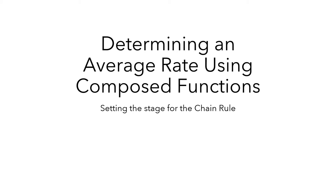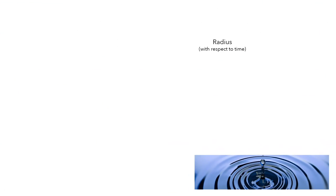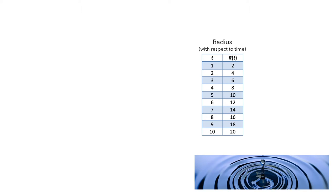In this video, I'll show you how to compute an average rate of change for a situation that is modeled by the composition of two functions. Let's consider a situation where a rock is thrown into a pond, where it creates a circular ripple that travels outward. Let the function r be the radius of the ripple t seconds after the rock hits the surface. This table provides data for the radius of the ripple for each second after the rock hit the pond water.